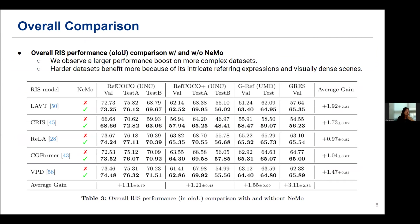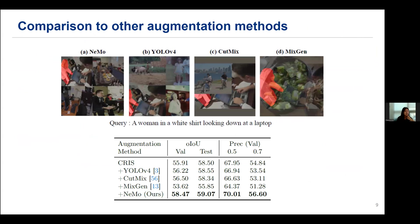Here's the main performance table. After augmentation with negative mosaics, we achieve consistent improvements in performance across different models and different datasets. We compared our NAMO pipeline with methods like YOLO, CutMix, and MixGen. Our approach performed the best, as it preserves the original context needed for referring image segmentation, while the other methods often disrupt the key visual elements and semantics.